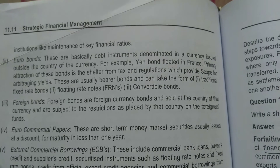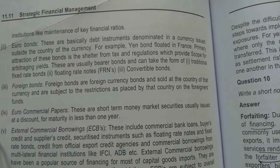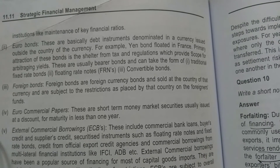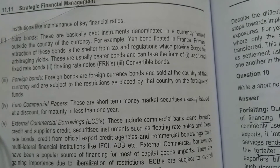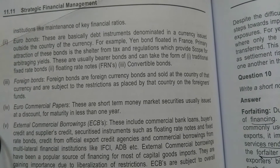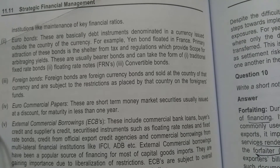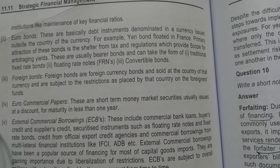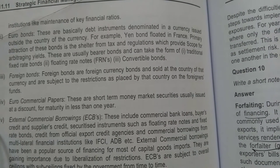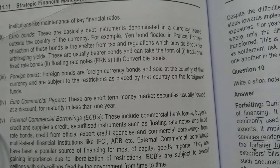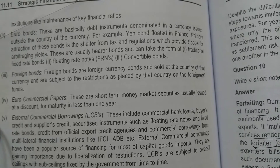Second, Euro bonds. These are purely debt instruments denominated in a currency issued outside the country of that currency. For example, yen bonds floated in France. The primary attraction of these bonds is the shelter from tax and regulations, which provides scope for arbitrage yields. These are usually bearer bonds.